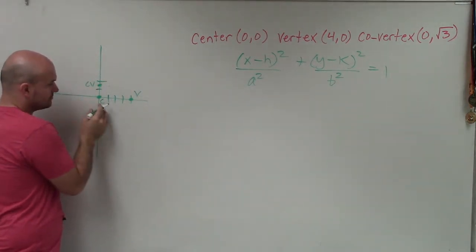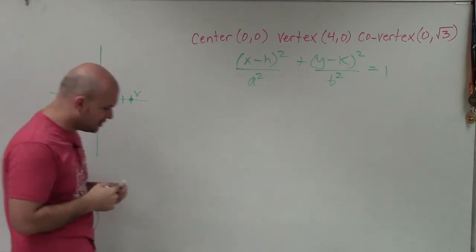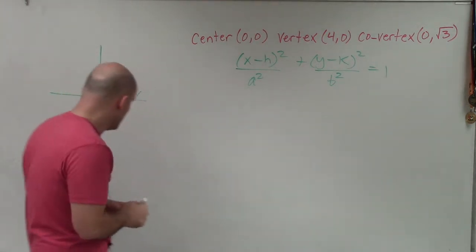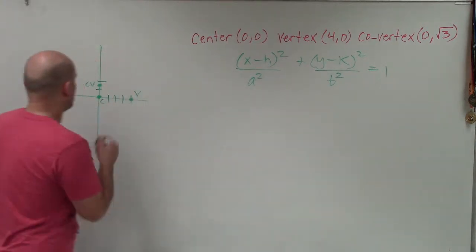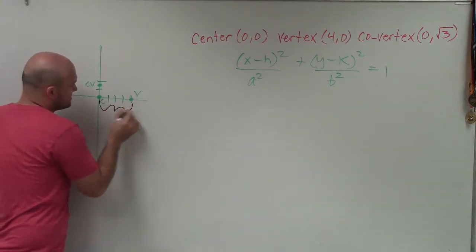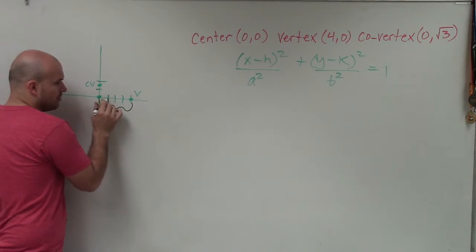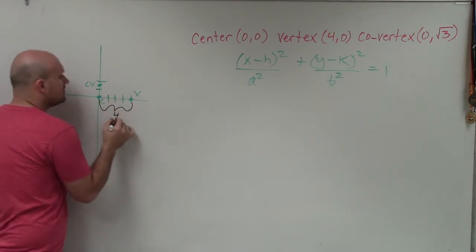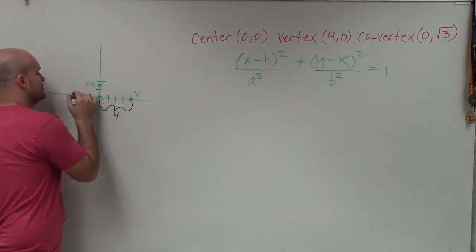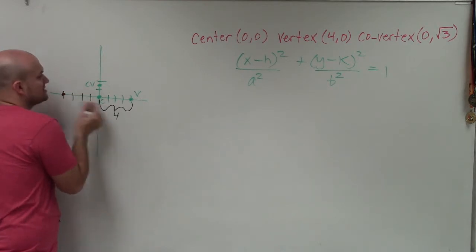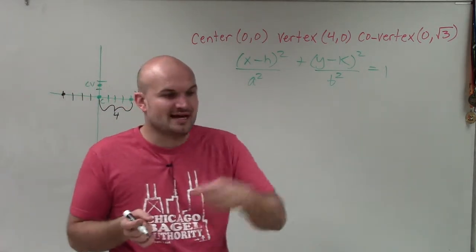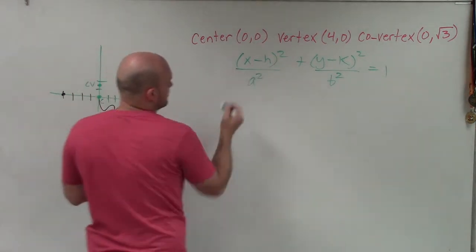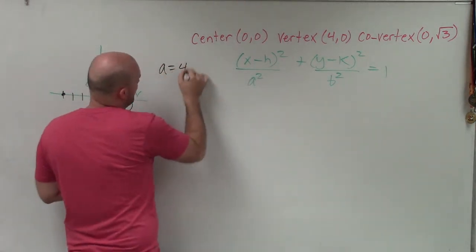Now let's evaluate a and b. Remember, a is the distance from the center to the vertex, which is 1, 2, 3, 4. There's another vertex over here, but it doesn't matter - distance is an absolute value. We square it, so a = 4.